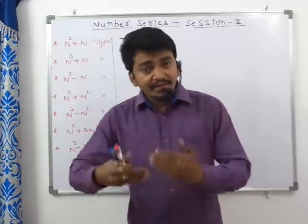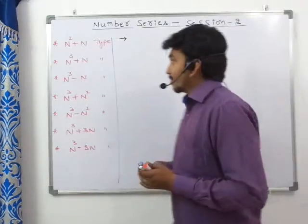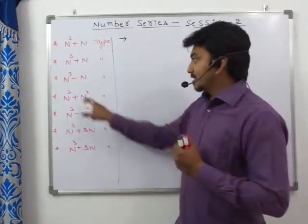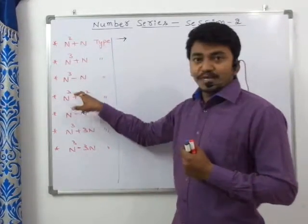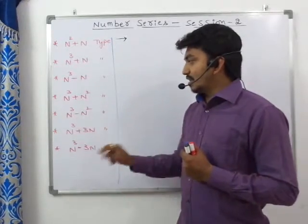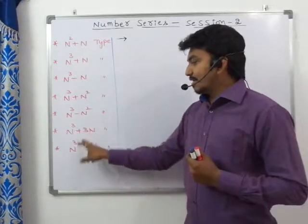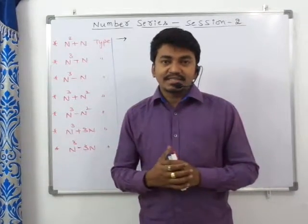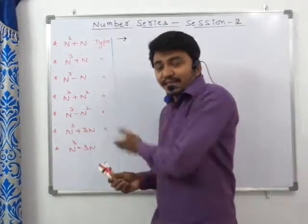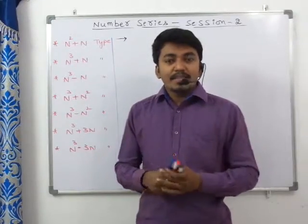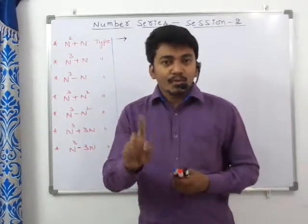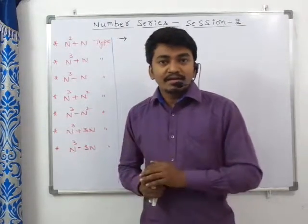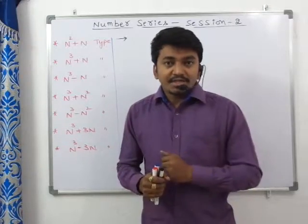The different types of questions include: N² + N type, N³ + N type, N³ - N, N³ + N², N³ - N², N³ + 3N, and N³ - 3N. All these are very important for many competitive exams. These questions can be done easily if you remember the squares of numbers from 1 to 25, the cubes from 1 to 11, and sometimes factorials. Let us start with the session.